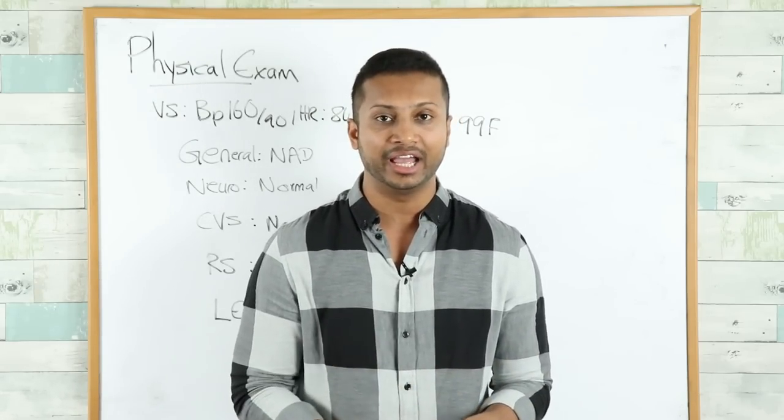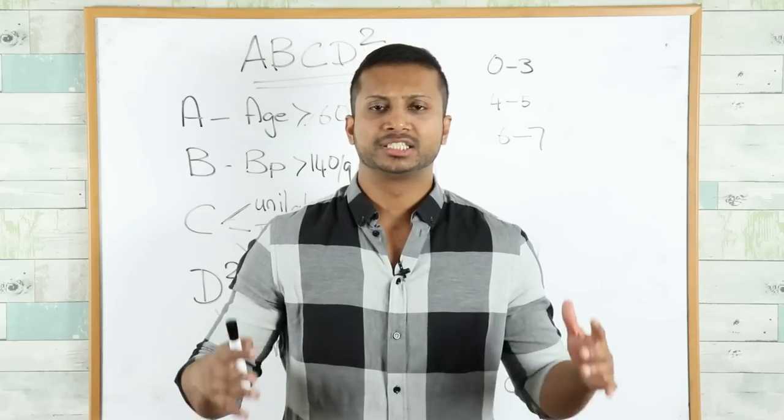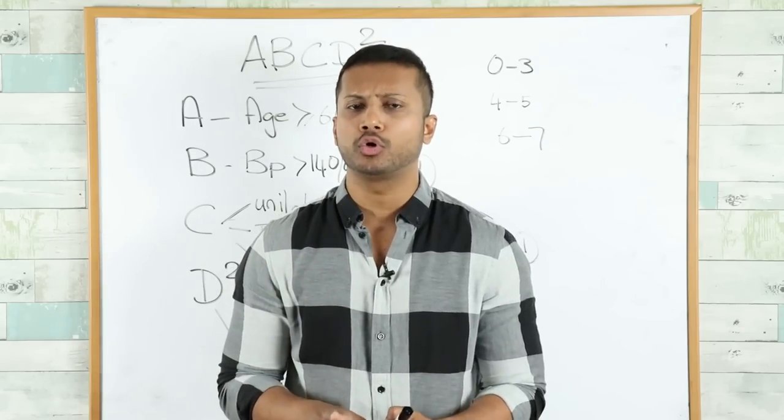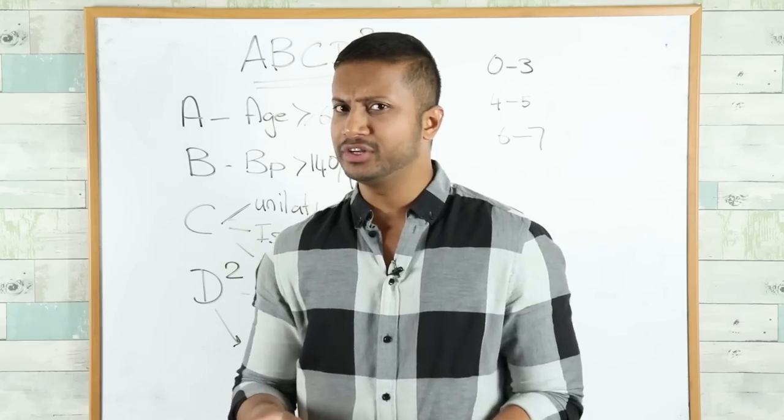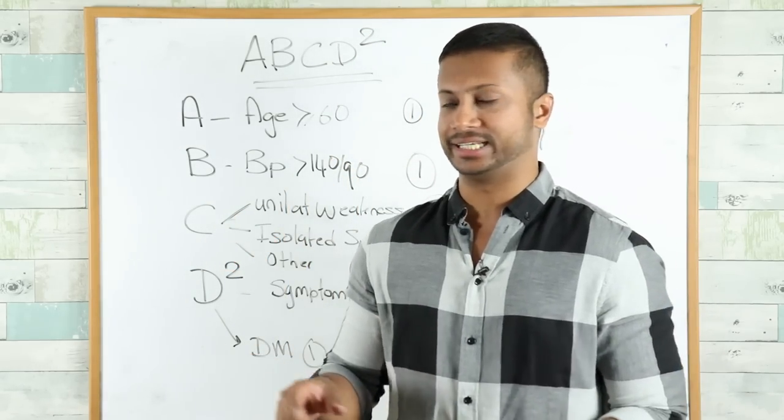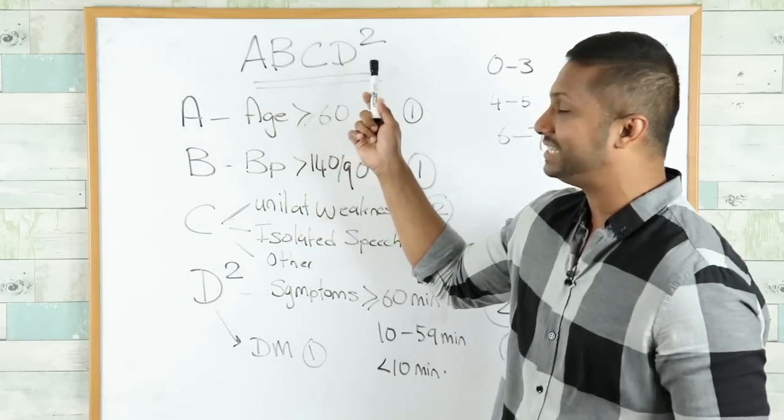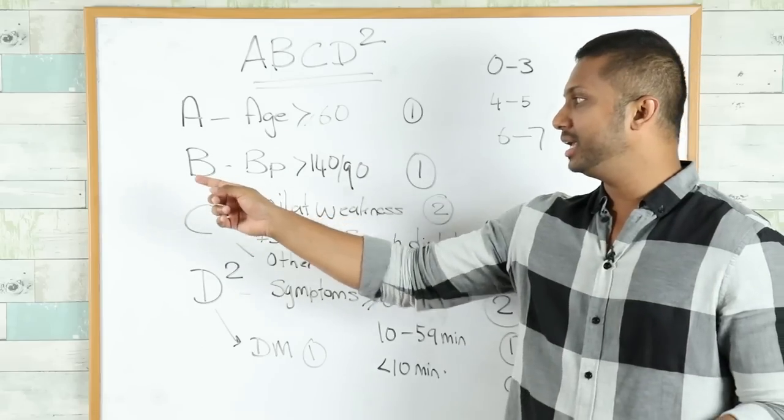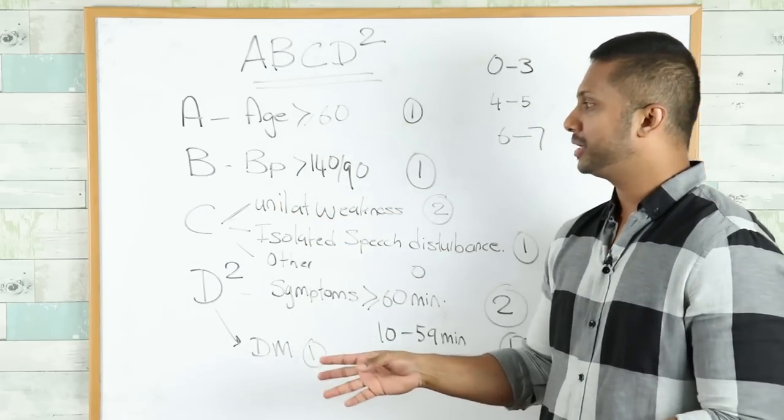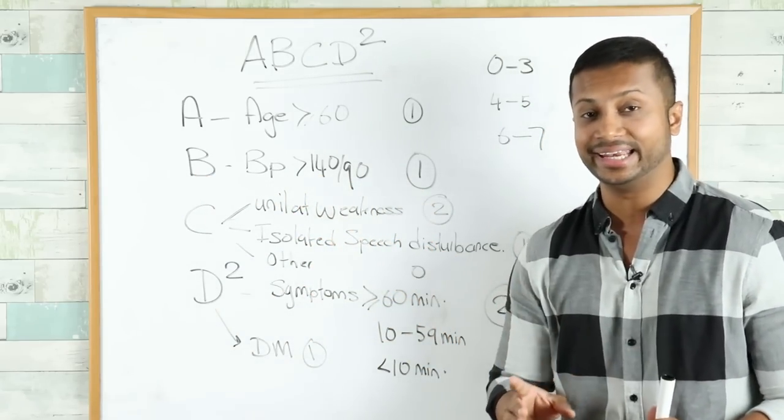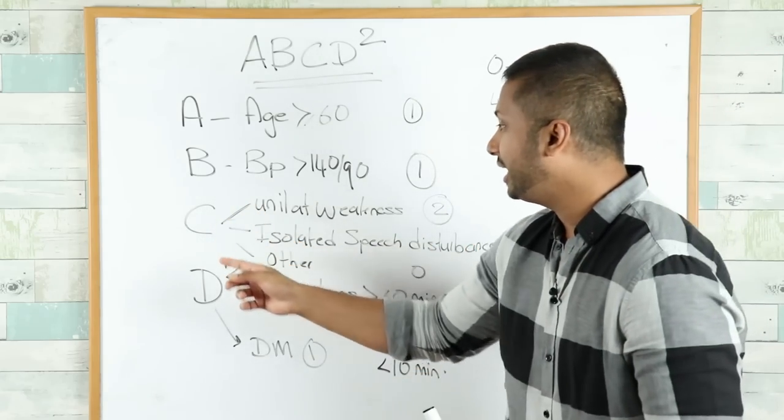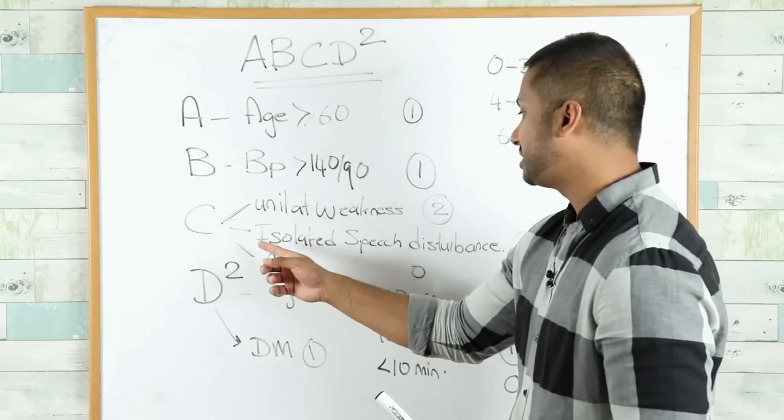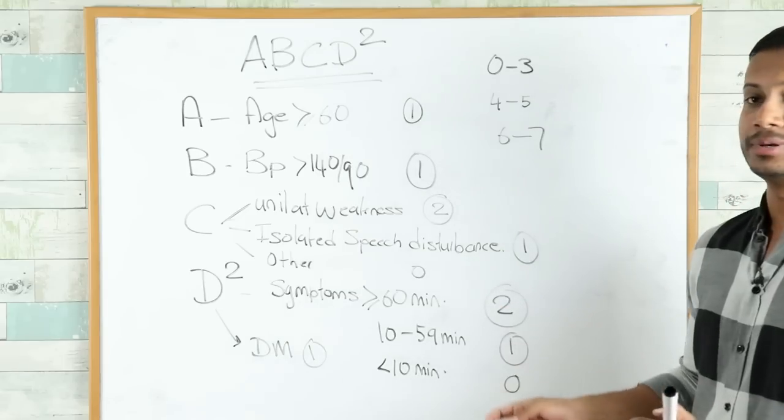Since we're on the subject of TIA, I need to tell you about one important scoring system that we do use, not often used in the hospital setting but rather in the primary care setting. This is known as your ABCD² score. A stands for age greater than 60—gets one point. B is for blood pressure: if the patient has blood pressure greater than 140 over 90, gets one point. C is for clinical symptoms: if the patient had unilateral weakness, that patient gets two points. If the patient has just isolated speech disturbance, the patient gets one point. All other symptoms get zero points.